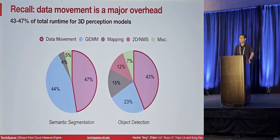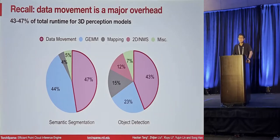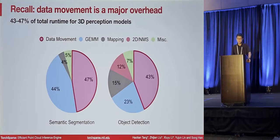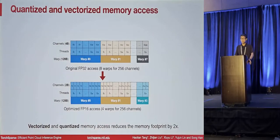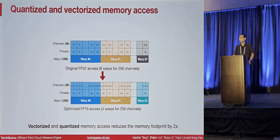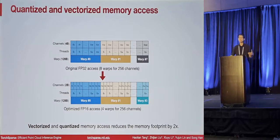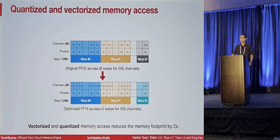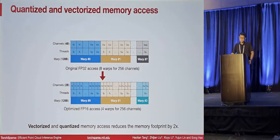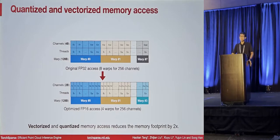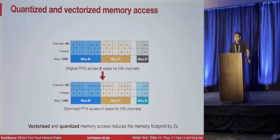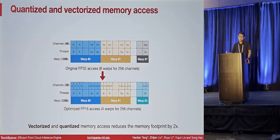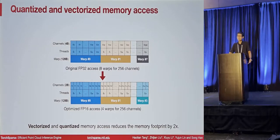Data movement is the largest overhead in sparse convolution computation, taking 43% to 47% of total runtime in both detection and segmentation models. The most straightforward way to improve data movement efficiency is to quantize the input features. However, if we naively quantize from FP32 to FP16, we only achieve 1.3 to 1.4 times speedup instead of close to 2 times. To solve this, we also vectorize the memory access — combining two FP16 memory accesses into a 32-bit memory access transaction — reducing CUDA memory transactions by 2x and achieving close to 1.9 times speedup.